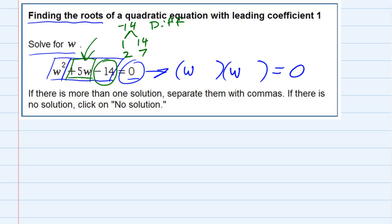So if I'm looking for different signs that add up to a positive 5, if this 2 were negative and the 7 was positive, then they would add up to a positive 5. So that being the case, this has to be a minus 2, and this has to be a plus 7.